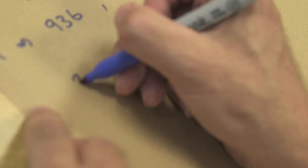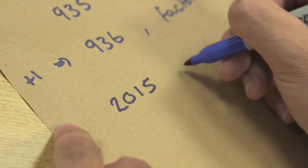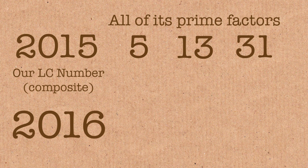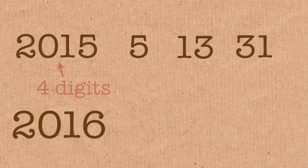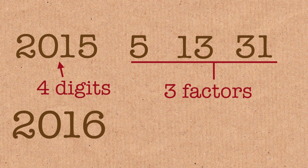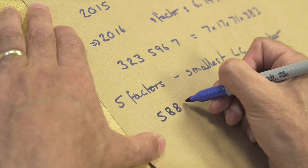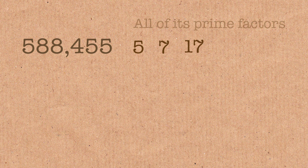You can play around with them as much as you like, but they're not that easy to find. So 2015 — add 1 and you get 2016. That has 4 digits and 3 factors. The smallest Lucas Carmichael number with 5 factors is, in fact, 588455.